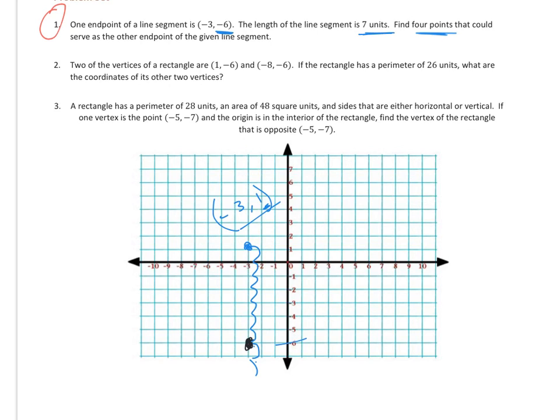A third way, a third point could be I could go to the right. And I'll do this one in red, and I can count 1, 2, 3, 4, 5, 6, 7. So there's a potential point, and that one is 4, negative 6.